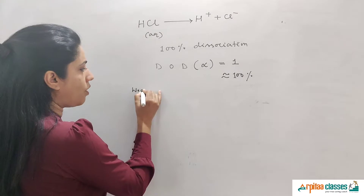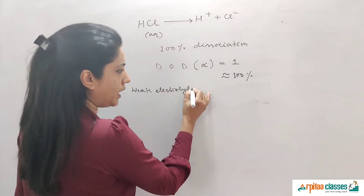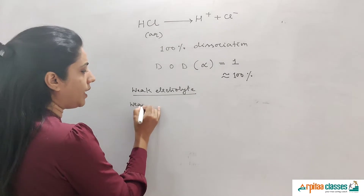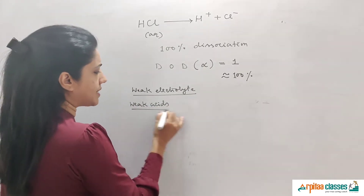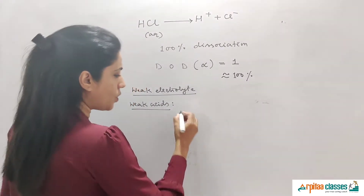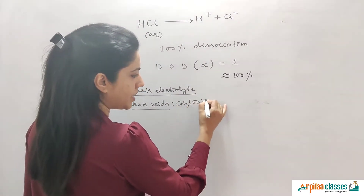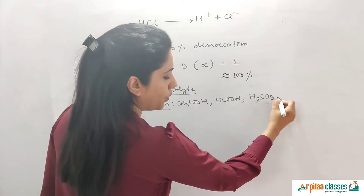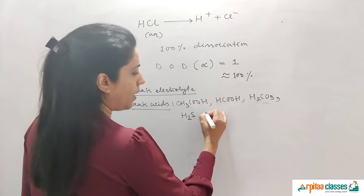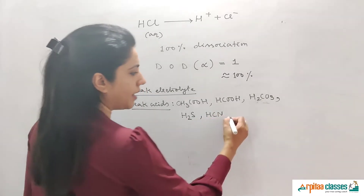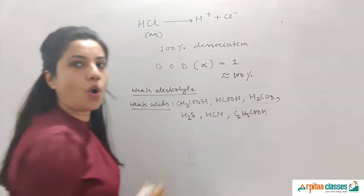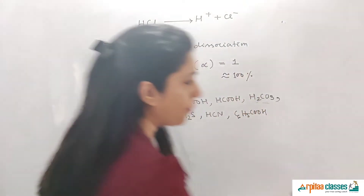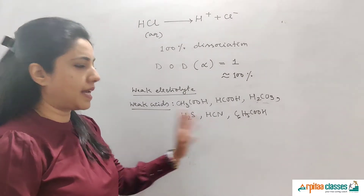Now, let's take examples of weak electrolytes, which we are going to talk about. All the weak acids are weak electrolytes — all organic acids are weak acids, for example: ethanoic acid (CH3COOH), formic acid (HCOOH), carbonic acid (H2CO3), hydrogen sulfide (H2S), hydrogen cyanide (HCN), and benzoic acid (C6H5COOH). Also, carbonic acid, H2S, and HCN are all weak acids.